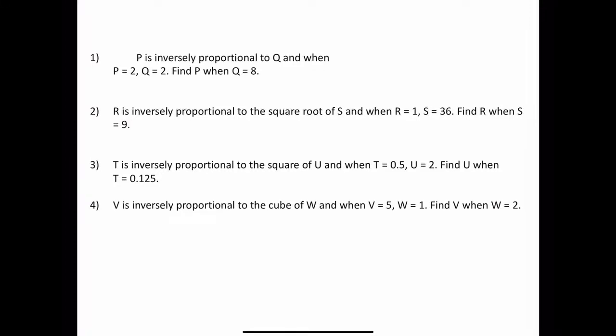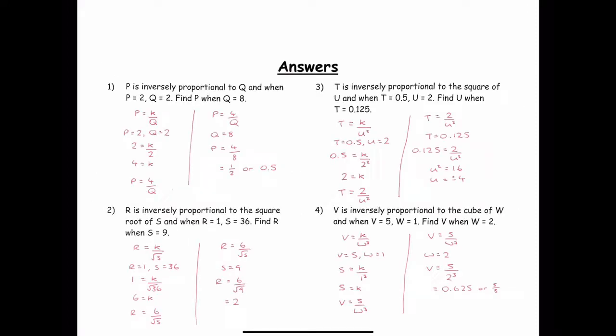I'll also want you to try these four questions. The same thing, inversely proportional questions. Pause this video, and then your answers should be these: 0.5. Relationship P is 4 over Q. Relationship R: 6 over root S. Answer is 2. T equals 2 over U squared, U is plus or minus 4. V is 5 over W to the power of 3. And answers. Thank you.